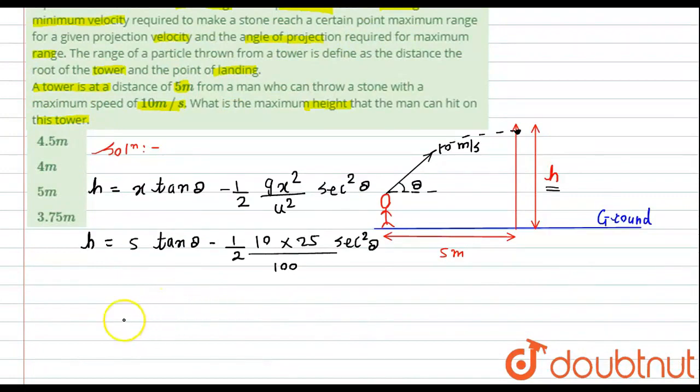If we further simplify it, we get h equals to 5 tan theta minus 5/4 sec² theta. Now according to the question, what is given? The maximum height that the man can hit the tower. We have to find the maximum height.